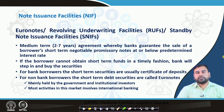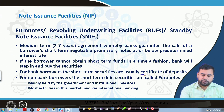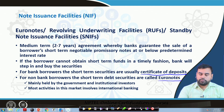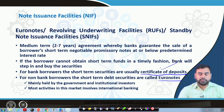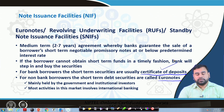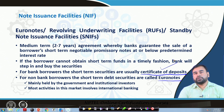For bank borrowers, the short-term securities are usually certificates of deposits, and for non-bank borrowers, they are Euronotes. When the bank deals with this kind of off-balance sheet activity, they can use CDs or certificates of deposits, but if issued by non-bank borrowers, we call them Euronotes. These are mainly held by governments and institutional investors, and most activities in this market involve international banking.